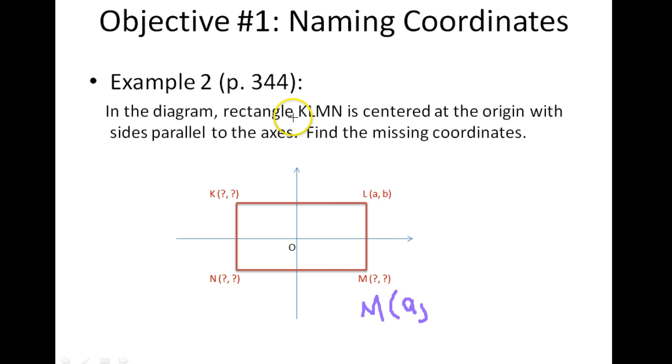And then again, because the rectangle KLMN is centered at the origin, we know that point L is equidistant from the x-axis as M is. So we know that the distance is still going to be B. However, because it lies below the origin, we know this is going to become a negative B instead of a positive B. So M, the coordinates are A, negative B.